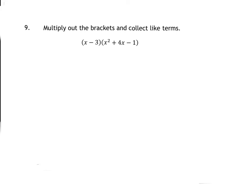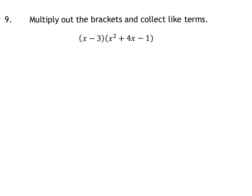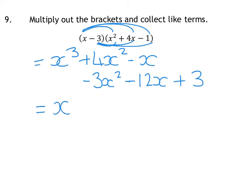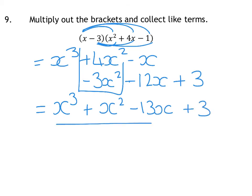Question 9: multiply out the brackets and simplify. Multiply everything by x first: x cubed plus 4x squared take away x. Then multiply everything by minus 3 — watch the signs. Minus 3 times x squared gives minus 3x squared; minus 3 times positive 4 gives minus 12x; minus times minus gives plus 3. Adding up: x cubed, plus (4 minus 3)x squared = plus x squared, then (minus 1 minus 12)x = minus 13x, plus 3.